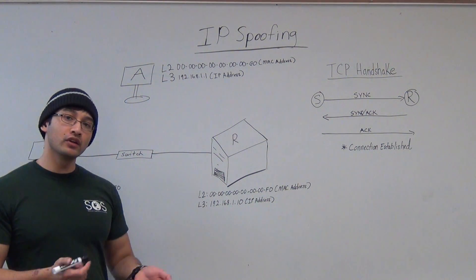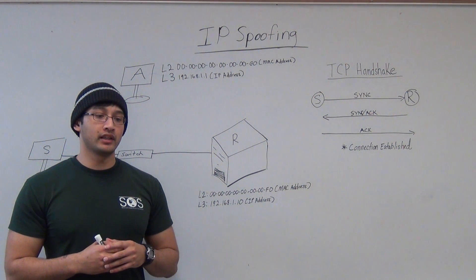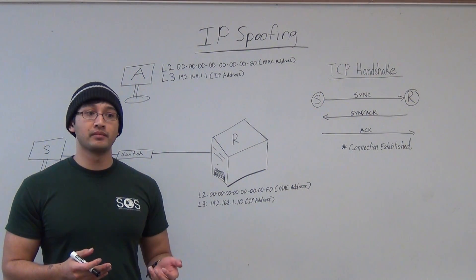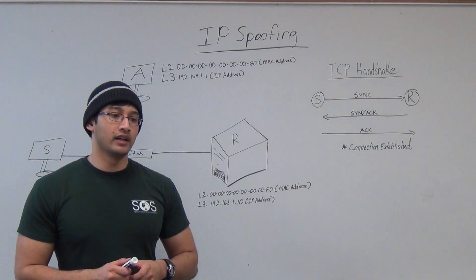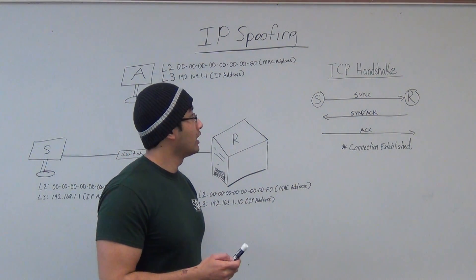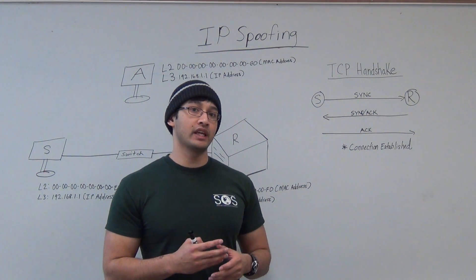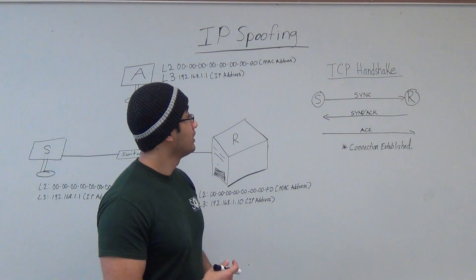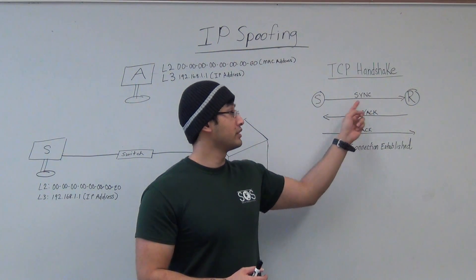Today we're going to cover IP spoofing. As you already know from our presentation earlier, IP spoofing involves an attacker stealing the source IP address of the victim and pretending to be a legitimate user. Before we begin, I want to talk about the TCP handshake, because you need to understand how the three-way handshake works before you can understand the IP spoofing I'm going to explain.